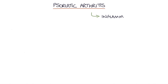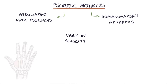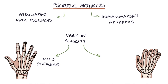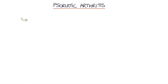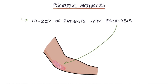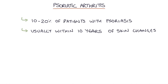Psoriatic arthritis is an inflammatory arthritis associated with psoriasis, and it can vary in severity. Patients might have mild stiffening and soreness in the joint, or the joint can be completely destroyed in a condition called arthritis mutilans. It occurs in about 10 to 20% of patients who have psoriasis, the skin condition which causes rashes and scaly patches on places like the elbows or scalp. It usually occurs within about 10 years of developing the skin changes, and if you've had the skin changes for more than 10 years without developing psoriatic arthritis, it's unlikely to develop after that point.